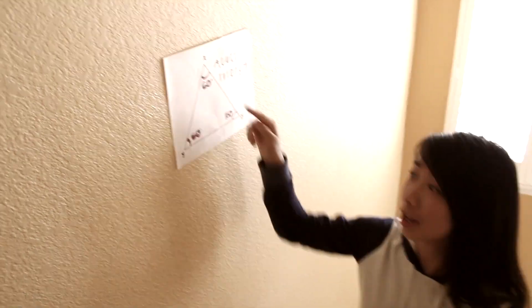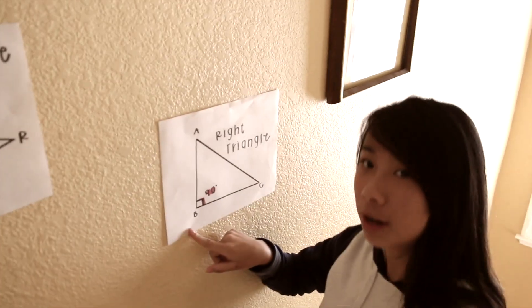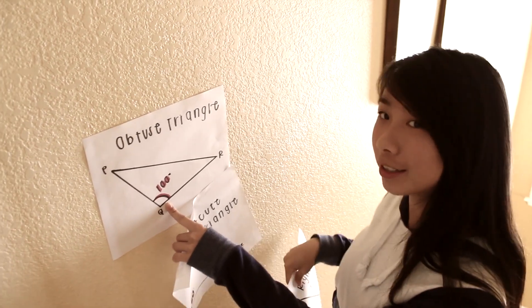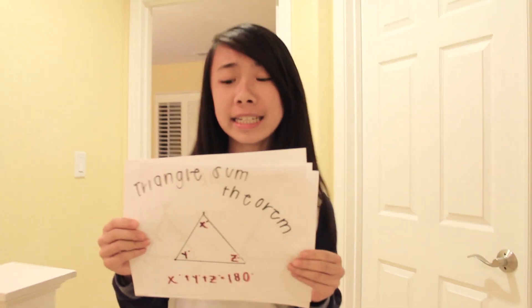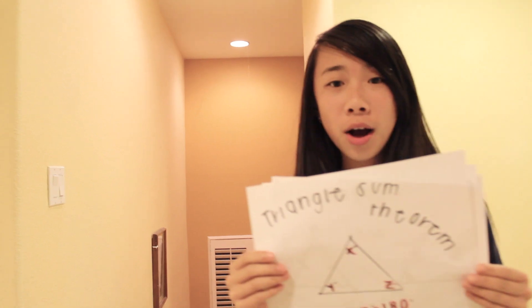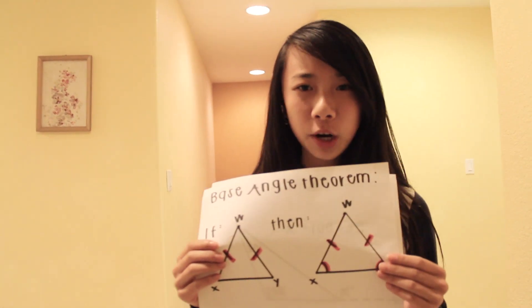Acute triangles: all three angles are acute. A right triangle has one right angle. Obtuse triangles: only one obtuse angle. Auxiliary line that outline — the sum of measures of the interior angles of a triangle is 180 degrees.